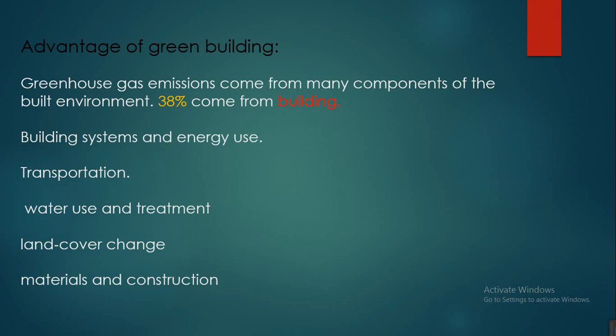Regarding the advantages of green buildings: most greenhouse gases come from buildings — 38 percent is coming from our buildings through different types of building systems and energy use, transportation, water use and treatment, land cover change, and materials and construction. This is where greenhouse gas emissions start.